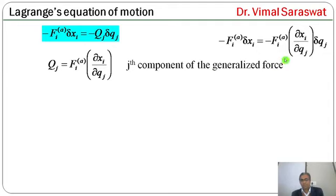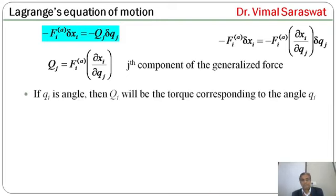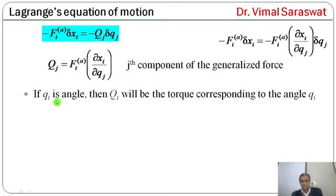The generalized force's j-th component Qj is defined as Fi_applied * ∂xi/∂qj. If qj is an angle, then capital Qj will be the torque corresponding to the angle qj.